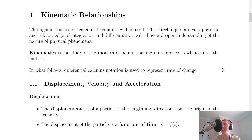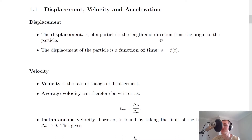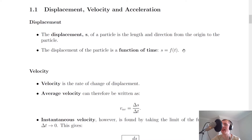Rate of change just means something with respect to time. For displacement, velocity, and acceleration, we're now going to look at the definitions of each and then how we can represent them as equations. The displacement s of a particle is the length and direction from the origin to the particle. We assume that our motion starts from the origin at time t equals zero, and our displacement will be the distance and the direction from the origin to that finish point where the particle is. A very important point is that the displacement of the particle is a function of time, so we can write this as s equals f(t).